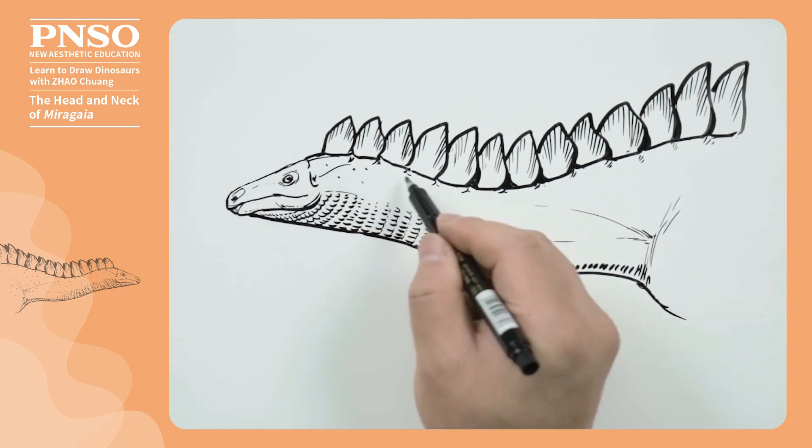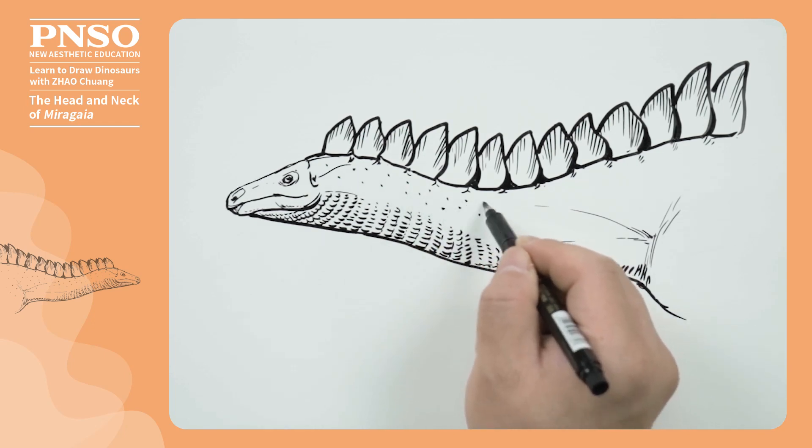Next, dab some black dots on the skin to show larger, raised scales mixed in with the small ones.